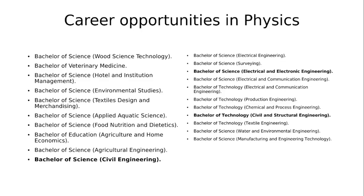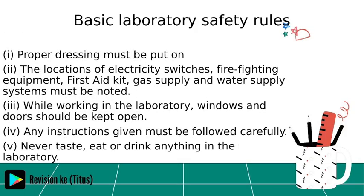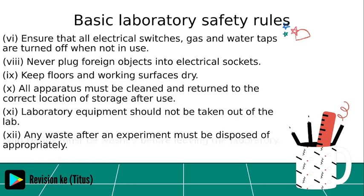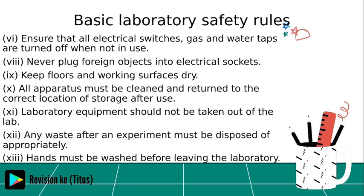Now the last subtopic: basic lab safety rules. One: proper dressing must be put on. Two: the locations of electricity switches, firefighting equipment, first aid kit, gas supply, and water supply systems must be noted. Three: while working in the lab, windows and doors should be kept open. Four: any instructions given must be followed carefully. Five: never taste or drink anything in the lab.